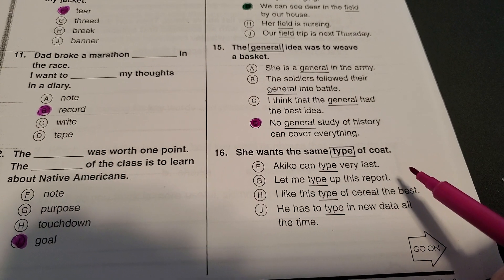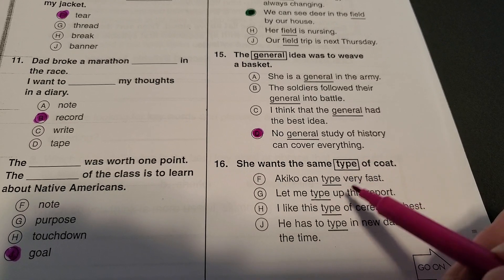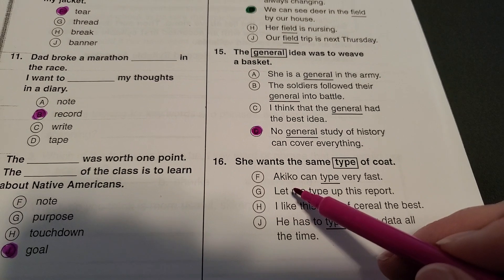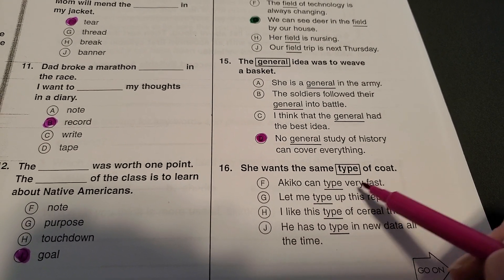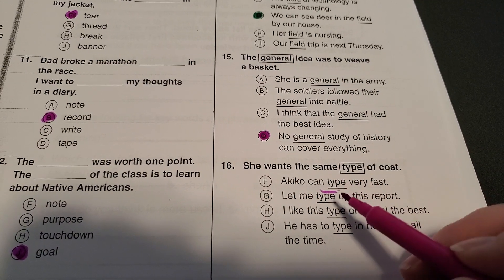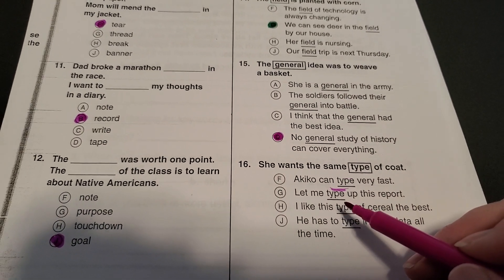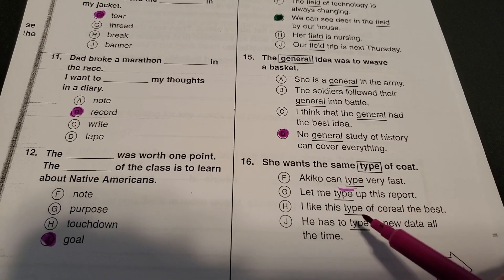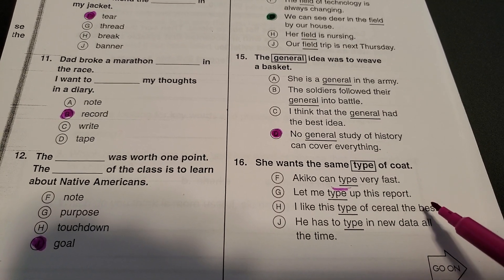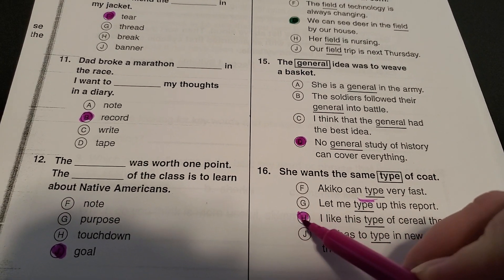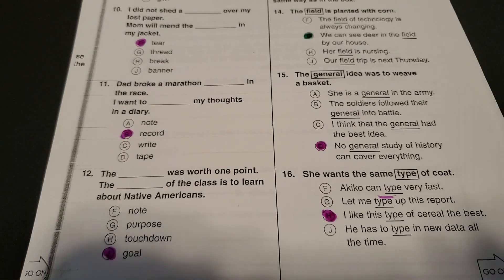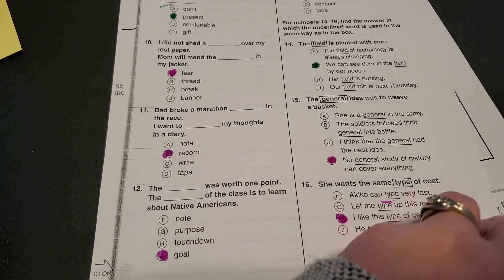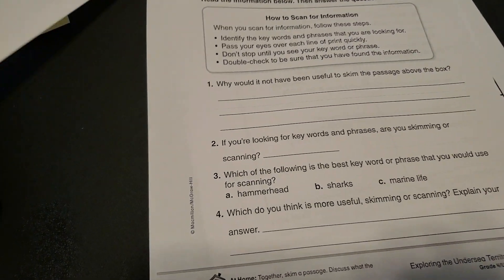She wants the same type of coat. So type is a kind of coat. Akiko can type very fast. Now that's a type like when you're typing on the computer. Let me type up this report. Again, you're typing that on a computer. I like this type of cereal the best. There's our kind, kind of cereal the best. Hopefully you guys like some cereal. My favorite kind of cereal, just to let you know, is that s'mores kind that you get at Walmart. Oh my gosh, it is so good. Love that kind.